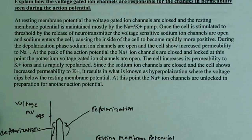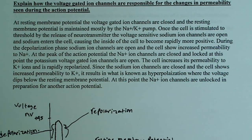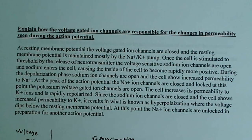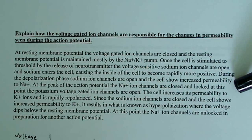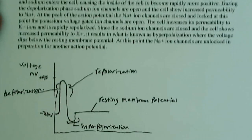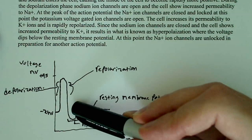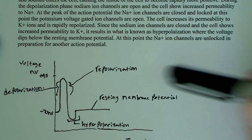At the peak of the action potential, the voltage-gated sodium ion channels close and lock — meaning they cannot be reopened. At that point, the voltage-gated potassium ion channels open. The cell then increases its permeability to potassium ions and rapidly repolarizes, showing a rapid decrease in membrane voltage.